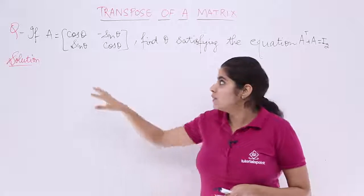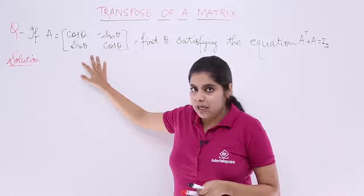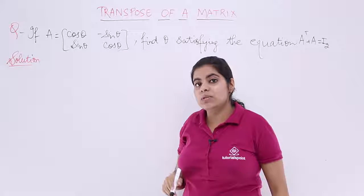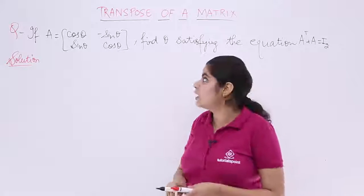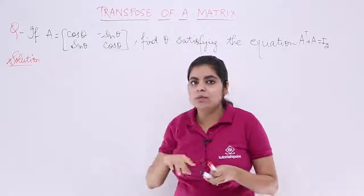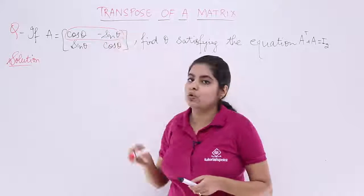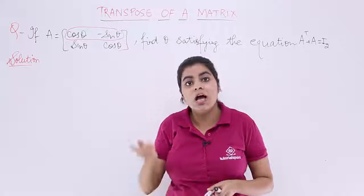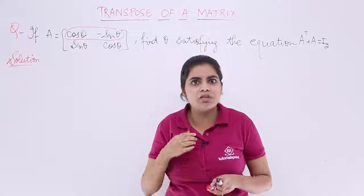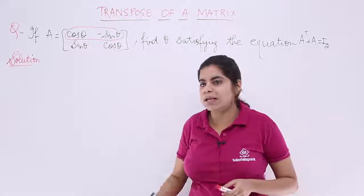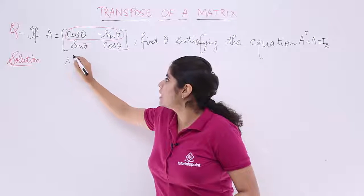Now, if this matrix given to me is A, what is A transpose? A transpose is basically where the rows become columns and columns become rows. If the first row is cos theta minus sin theta, A transpose will have the first column as cos theta minus sin theta.